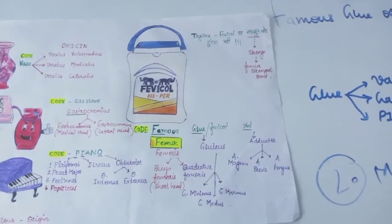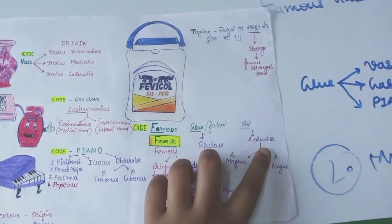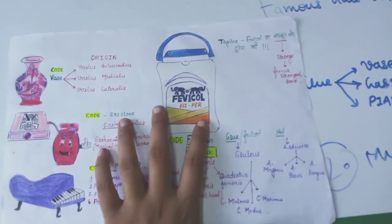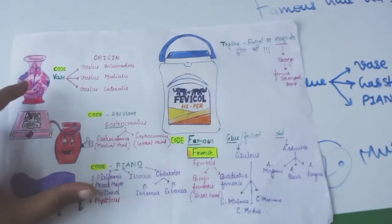Femur, then glu says gluteus and adductor. And Fevicol says what all can be glued - vase can be glued.